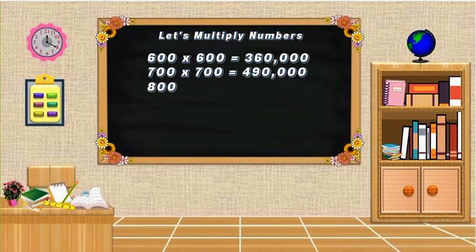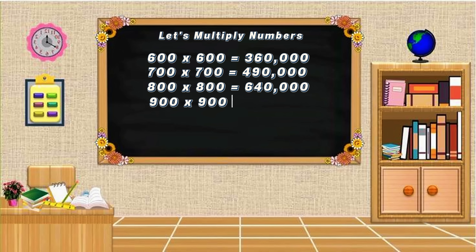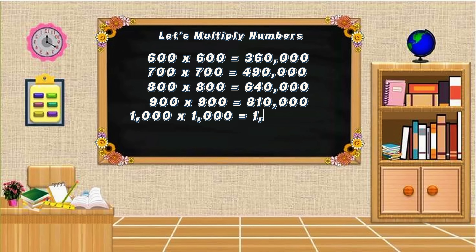800 multiplied by 800 is equals to 640,000. 900 multiplied by 900 is equals to 810,000. 1,000 multiplied by 1,000 is equals to 1,000,000.